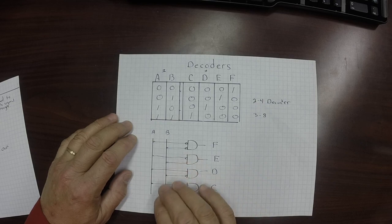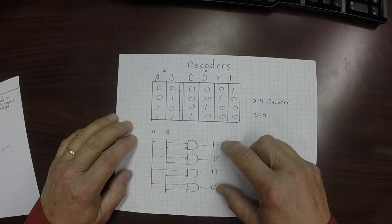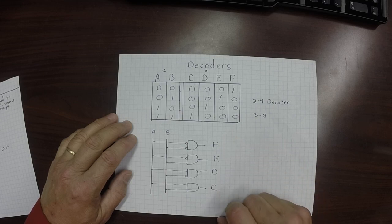Now that's a decoder. In a decoder, this is called a 2-4 decoder. I have two signals coming in and I have one of four coming out, only one of which is actually going to make it.